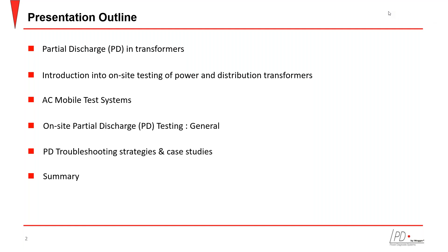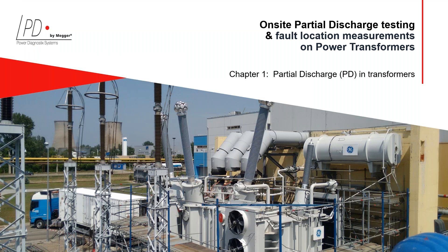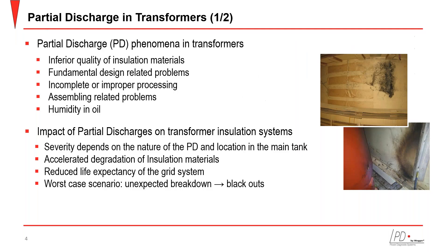Changing slides momentarily. Chapter one concerns PD in transformers. Partial discharge phenomena in transformers have several root causes: issues with the quality of insulation materials inferior to the field strength, fundamental design problems such as miscalculated internal electrical fields or over-straining of insulation components, and for oil-immersed as well as cast resin transformers, incomplete processing during the vacuum or impregnating stage can also cause partial discharge.